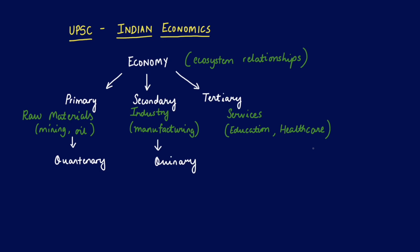Beyond the three major sectors, there are two smaller sectors: the quaternary and quinary sectors. The quaternary sector is where the economy's strength lies in knowledge, research and development — a great example would be Israel, whose strong point is education and R&D projects. The quinary sector is essentially the elite 1% of government or corporations that make economic decisions or are part of the policy-making process.